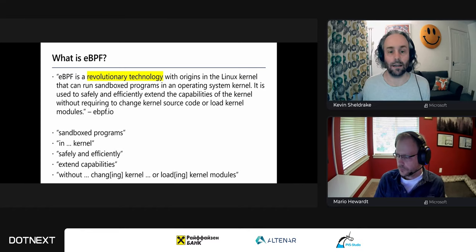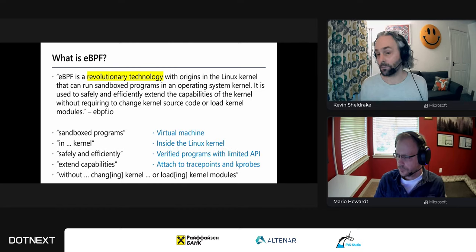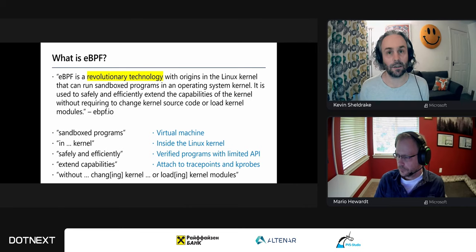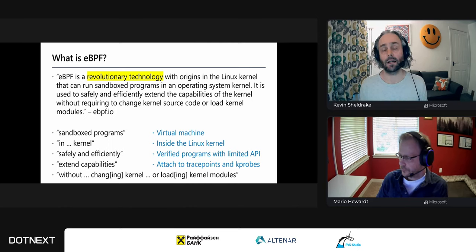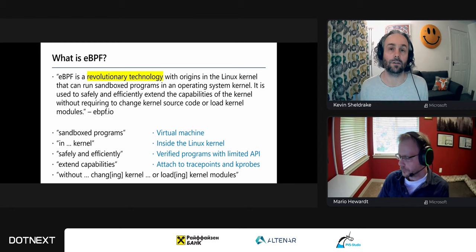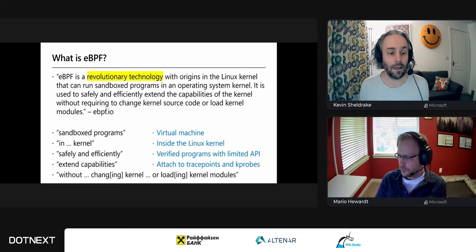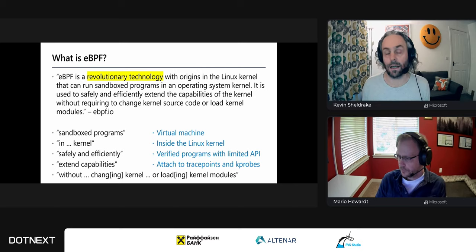The important things to pull out: sandboxed programs meaning they run inside a virtual machine literally inside the kernel; safely and efficiently because the programs are verified by a kernel verifier before they're loaded; and the API accessible to eBPF programs is limited. It's there to extend capabilities — i.e., attach to trace points and kprobes within the kernel — without changing the kernel source or loading kernel modules, meaning without recompiling your kernel or rebooting.